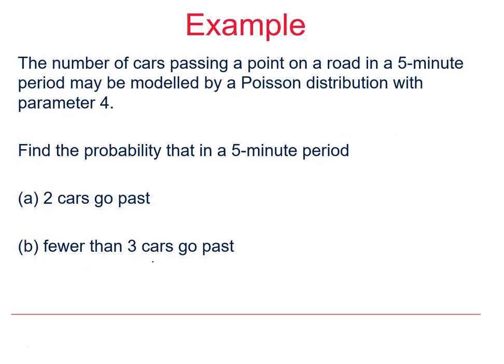Looking at an example here, our random variable is going to be the number of cars passing a point on a road, and our time interval that goes along with that is in a five-minute time period. X can be modeled by a Poisson distribution with parameter lambda equals 4, so we would write X ~ Po(4). We have to work out two probabilities, both involving that five-minute period: first, that exactly two cars go past, and secondly, fewer than three go past in that five-minute period.